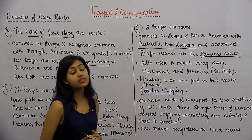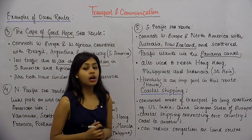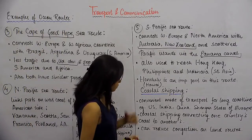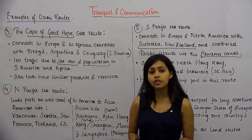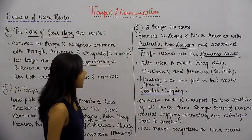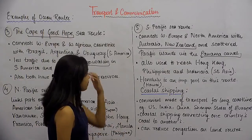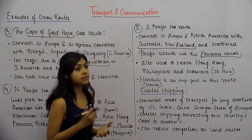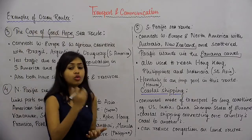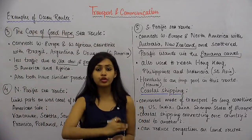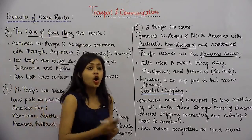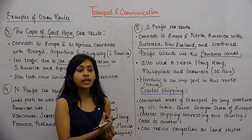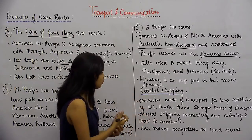These things can be confusing to remember, so it's always good practice to map all of them on a world map. We have just covered all the important ocean route examples. The next thing we are going to look at is Coastal Shipping. Coastal shipping is a convenient mode of transport for countries with long coastlines — countries which have a large stretch of coastline.